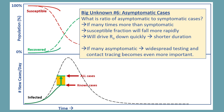Another big unknown is that we do not know how many asymptomatic cases there are for every symptomatic case. The reason for this is that very few countries have done widespread testing of the entire population. These are the known cases here, but if there are many asymptomatic cases that we don't know about, we will be underestimating the true rate of immunity or the true rate of recovered — because maybe there are a lot more recovered people in the community that we do not know about. That means the susceptible fraction is lower, which will drive R0 down quickly. So if there are many asymptomatic cases, that makes widespread testing and contact tracing even more important.